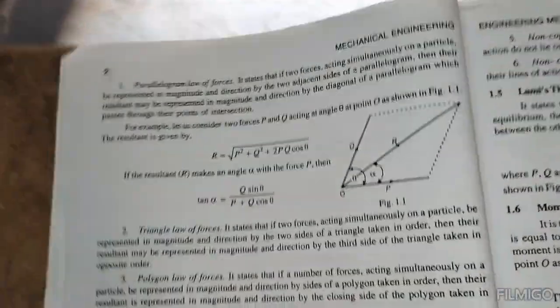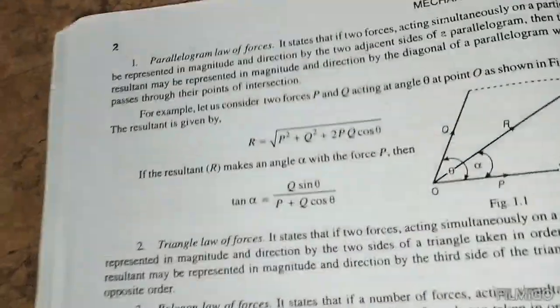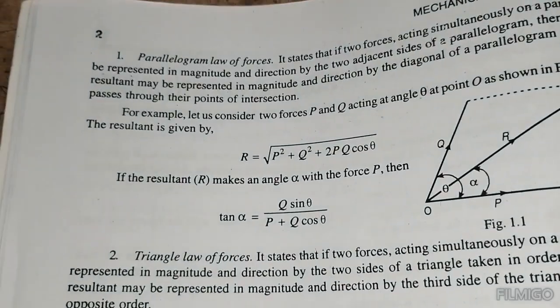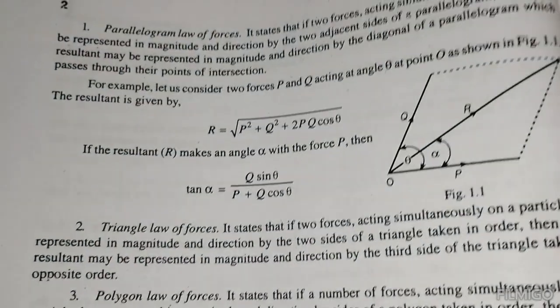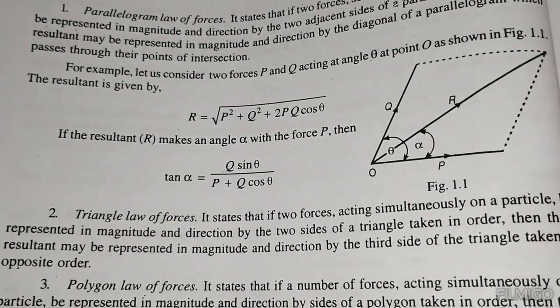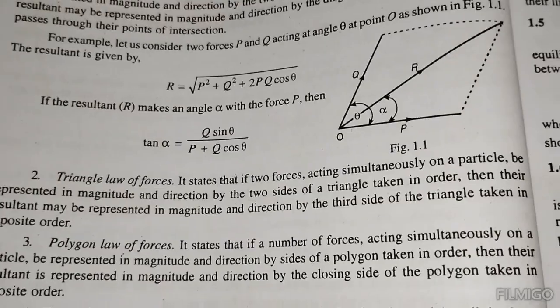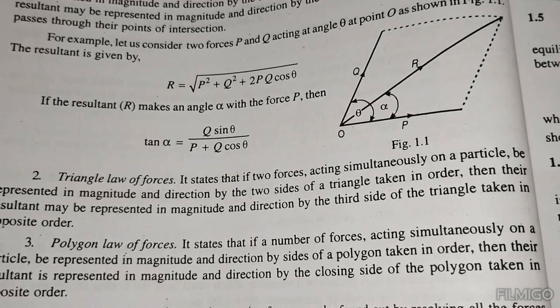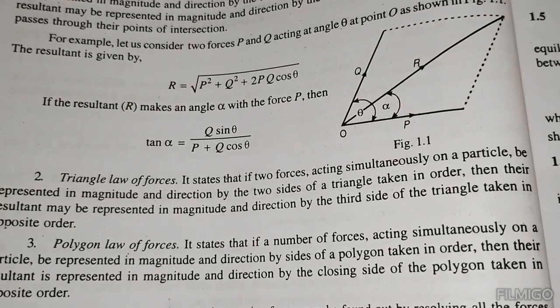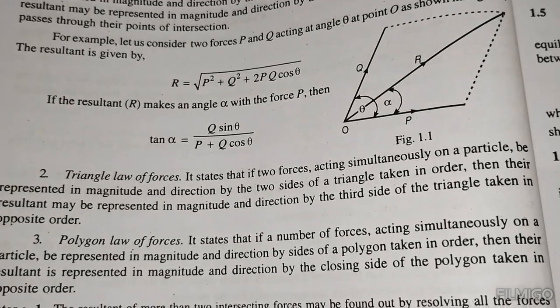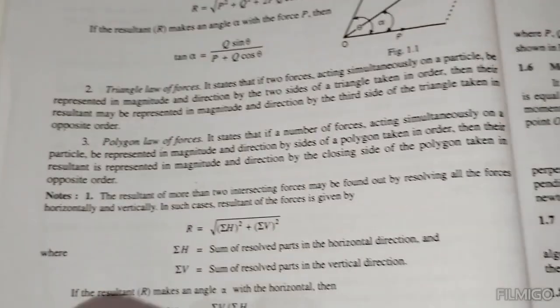The resultant force by the parallelogram law of forces is: R equals the square root of P squared plus Q squared plus 2PQ cos theta. The angle alpha that the resultant makes is given by tan alpha equals Q sin theta divided by P plus Q cos theta.